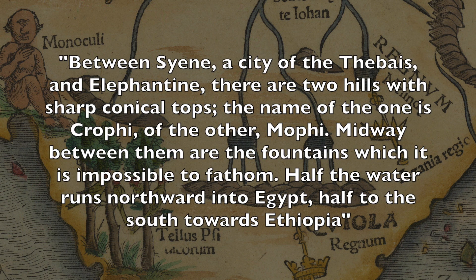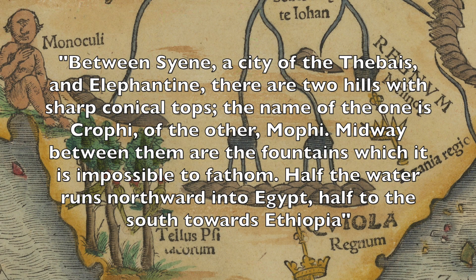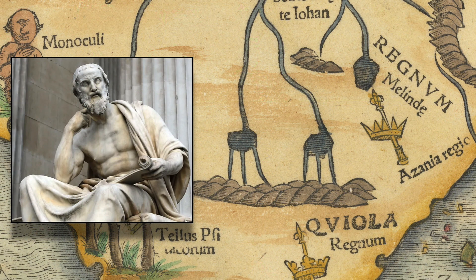A local told Herodotus: "Between Syene, a city of the Thebias, and Elephantine, there are two hills with sharp conical tops. The name of one is Krofi and the other Mophi. Midway between them are the fountains of the Nile, fountains which it is impossible to fathom. Half the water runs northward into Egypt, half to the south towards Ethiopia." However, Herodotus was hesitant to take the man at his word, and noted that he could not find a second person with the same claim.